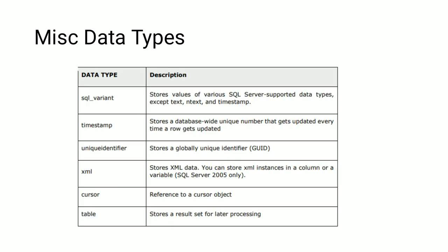Miscellaneous data types include SQL_VARIANT, TIMESTAMP, UNIQUEIDENTIFIER, XML, CURSOR, and TABLE. SQL_VARIANT stores values of various SQL Server supported data types except text and timestamp. TIMESTAMP stores a database-wide unique number that gets updated every time a row is updated. UNIQUEIDENTIFIER stores a globally unique identifier (GUID). XML stores XML data and XML instances, normally used in SQL Server 2005 only. CURSOR references a cursor object, and TABLE stores a result set for later processing.